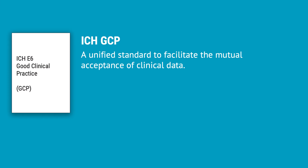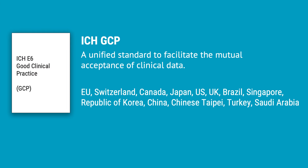ICH does this by developing technical guidelines and requirements that can be used by regulatory authorities and the pharmaceutical industry. Harmonization leads to a more rational use of human and animal and other resources, and it aims to eliminate unnecessary delays in the development of new therapies. GCP follows the ICH and enforces tight guidelines on the ethical aspects of clinical research. The ICH's GCP document therefore provides a unified standard for the European Union, Switzerland, Canada, Japan, and the United States on how to generate clinical data. If you want to read more about the ICH GCP guideline, there's a link below the video.